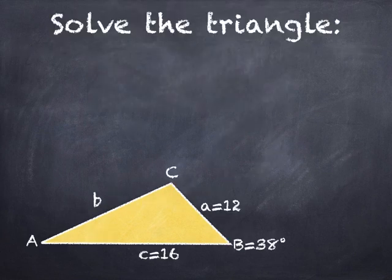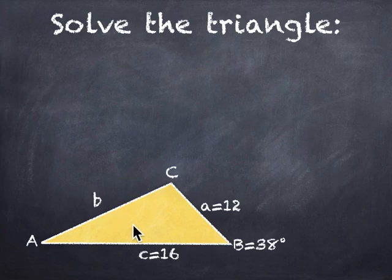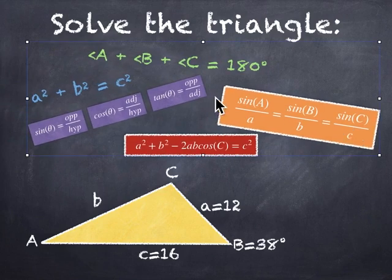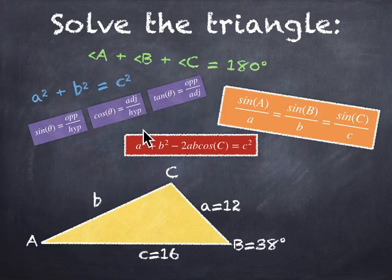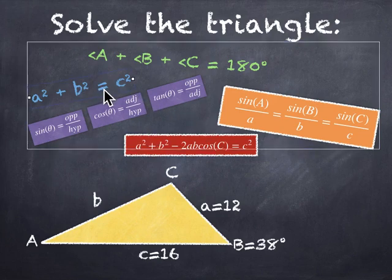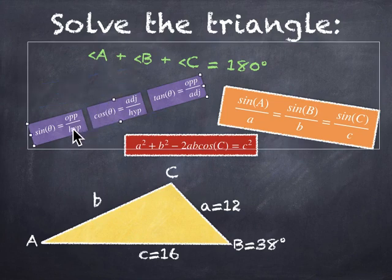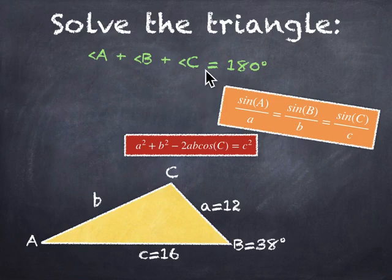Here's an example — the familiar question: solve the triangle. Our goal is to find all three sides and three angles. Let's review the different facts we know about triangles: the Pythagorean theorem, the angle sum theorem, the SOHCAHTOA trig ratios, and so on. Unfortunately, not all of these apply. The Pythagorean theorem, a squared plus b squared equals c squared, is not true if you don't have a right triangle, and the trig ratios don't apply without a right triangle either.